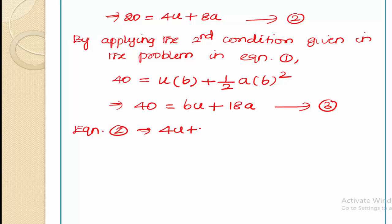We are having two equations with two unknowns: equation 2, 4u plus 8a is equal to 20, and equation 3, 6u plus 18a is equal to 40. We are having two algebraic equations with two unknowns, so we can easily solve these equations to get the value for both unknown components.